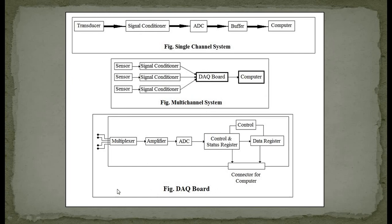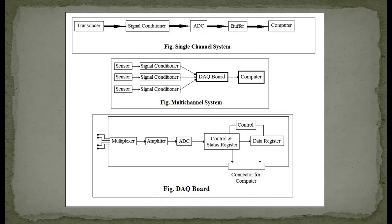Looking at the DAQ board components in the bottom figure: data coming from signal conditioners first enters a multiplexer. The multiplexer has multiple inputs and one output, selecting which input signal to send to the amplifier according to the program. The selected signal is amplified and given to the ADC, which converts the analog signal into digital format. The digital data is then placed into a controls and status register or data register, from which it is sent to the computer.